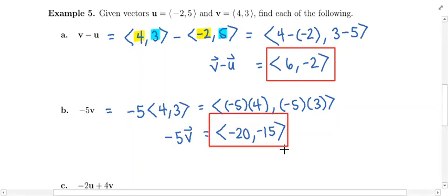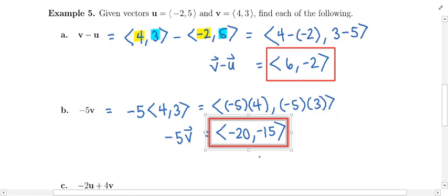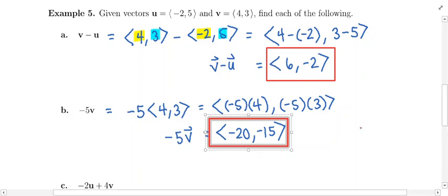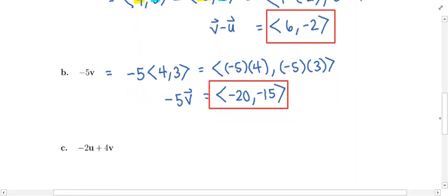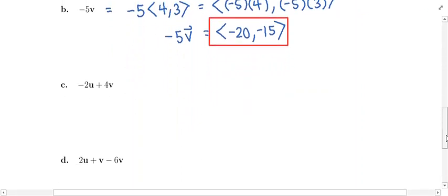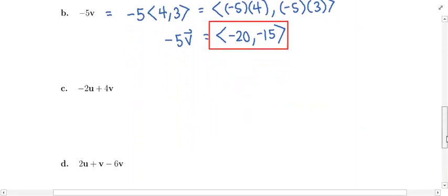Remember what this means. If you had to draw this vector out, it would start at the origin — that would be its initial point. And then its terminal point would be located at the point, the x, y pair negative 20, negative 15. Let's try the next one in part c.